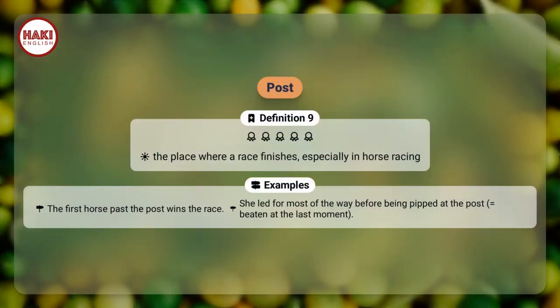Definition 9. The place where a race finishes, especially in horse racing. Examples: The first horse past the post wins the race. She led for most of the way before being pipped at the post, meaning beaten at the last moment.